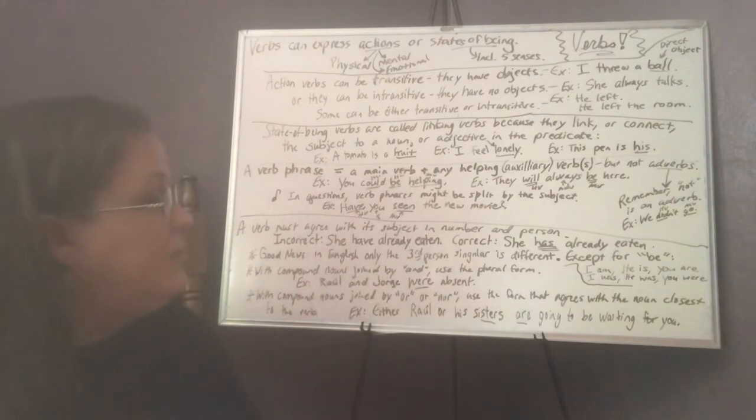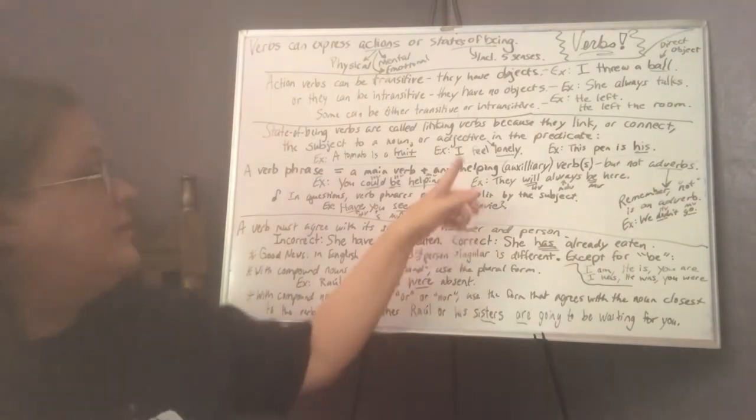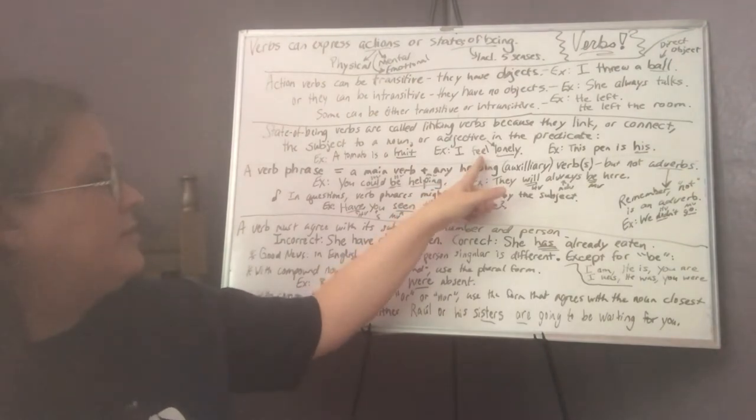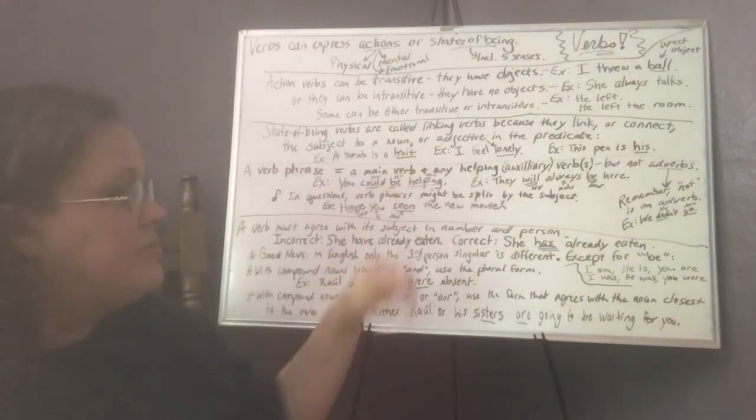Another example, I feel lonely. The word lonely is an adjective. And there's nothing there for it to describe, so it has to describe the subject. And this word feel is the linking verb that links the word lonely to the subject.